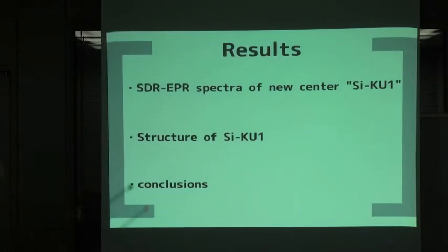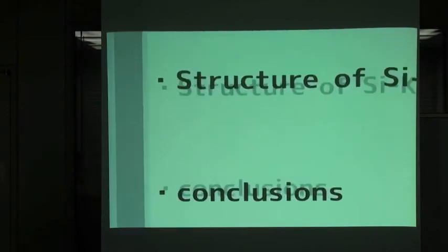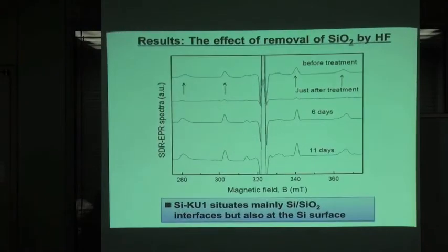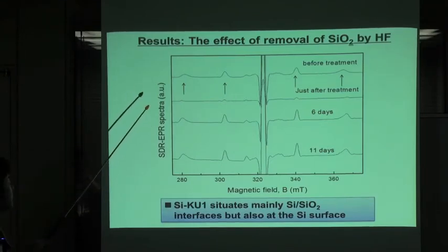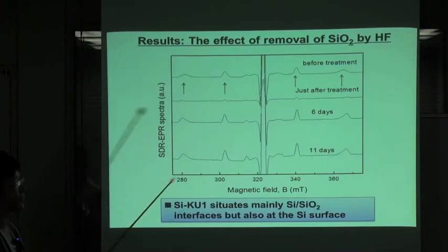In the next experiment, I check the structure of SI-KU1. One of the ways to analyze the origin of KU1 is to remove the oxide layer by HF and check the signal again. In this experiment, we put the silicon in dilute HF and check the signal again.